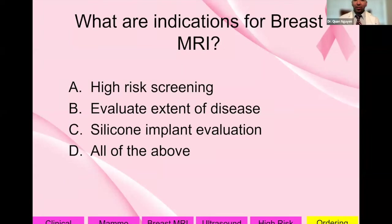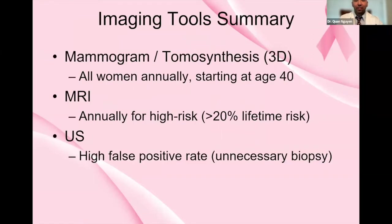What are the indications for breast MRI? The most common uses are high-risk screening and evaluating extent of disease. Breast MRI can also be used for silicone implant evaluation — so all of the above. In summary: for all women starting at age 40, do a mammogram — ideally 3D. For high-risk patients, add an annual MRI. Screening ultrasound has a high false-positive rate and leads to many unnecessary biopsies.